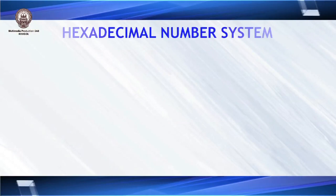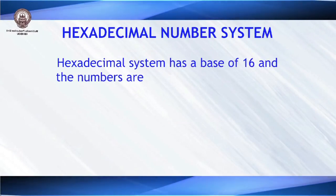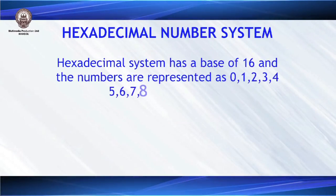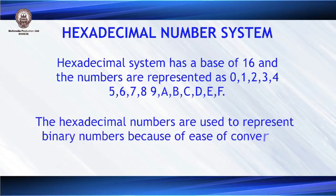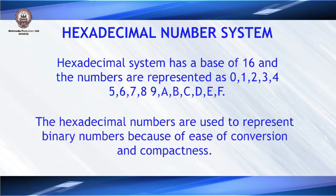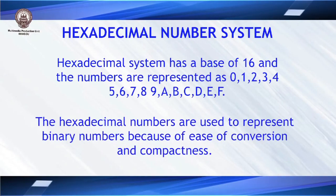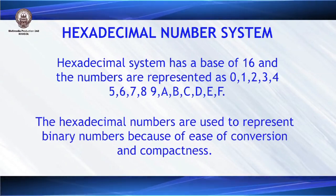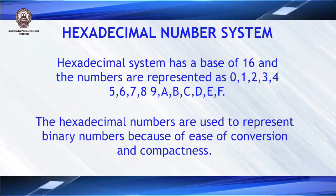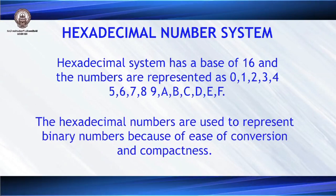Now let's look at the hexadecimal number system. In hexadecimal, there are 16 numbers, so it has a base of 16. The 16 symbols are 0, 1, 2, 3, 4, 5, 6, 7, 8, 9, followed by the letters A, B, C, D, E, F.